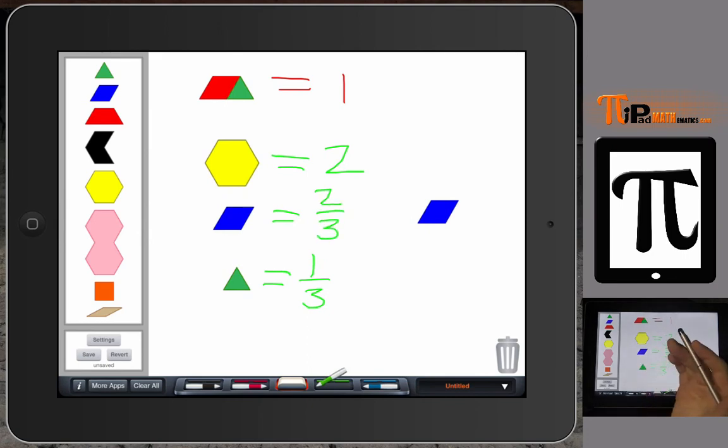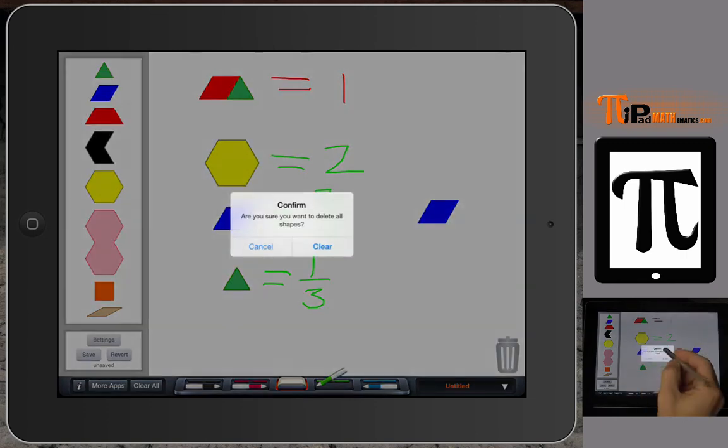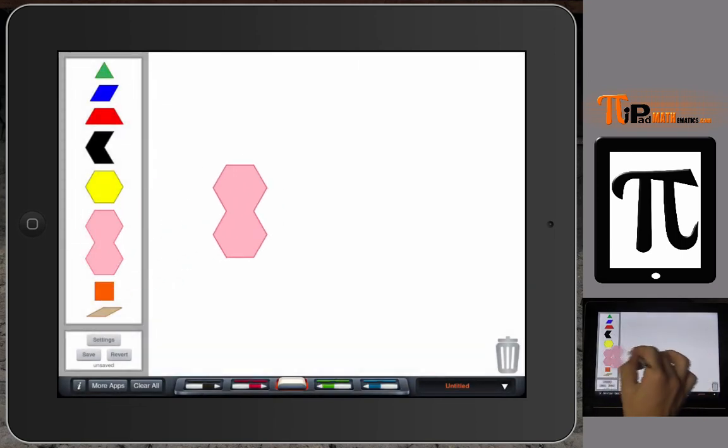So pattern blocks, these manipulatives help model basic fractions. And it's all about defining the whole. So what I'm going to do is I'm going to clear all and I'm going to do another example to where, and I like this app because it gives you different holes.